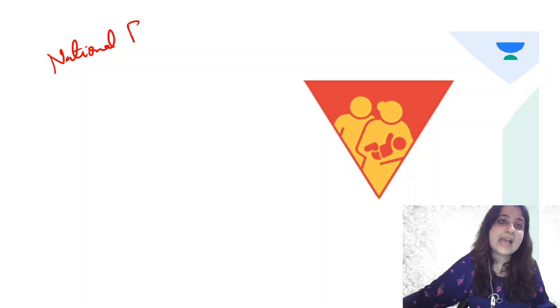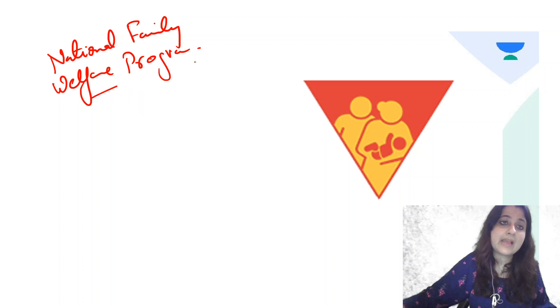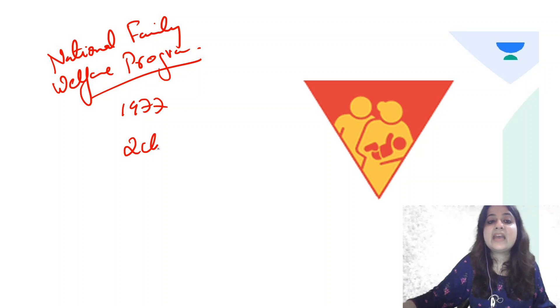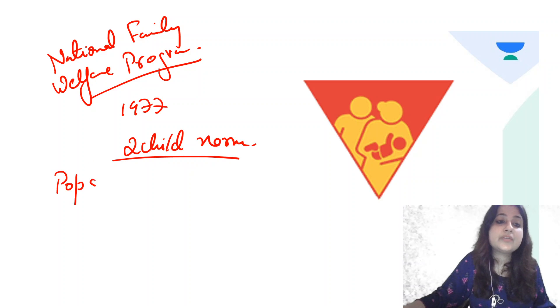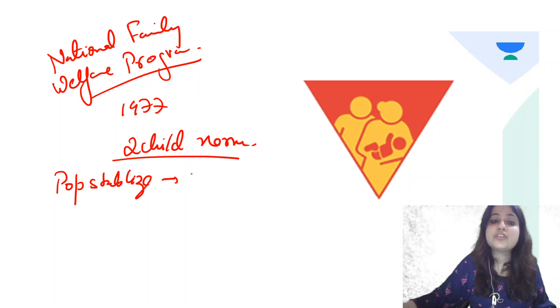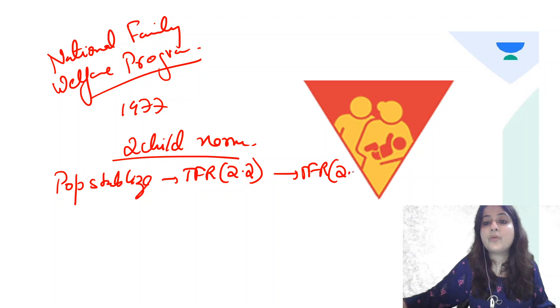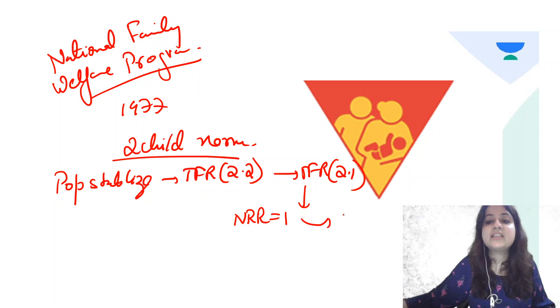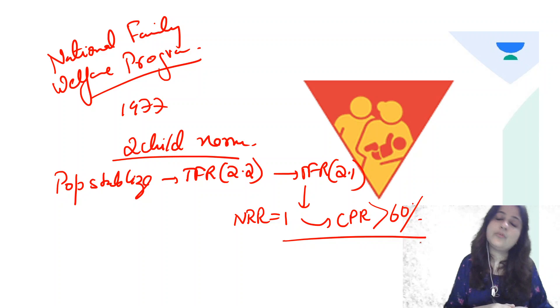The last logo for the day is an inverted triangle — this is the National Family Welfare Program. It was earlier called the National Family Planning Program; in 1977 it was renamed. We adopt a two-child norm according to our National Population Policy. Our current TFR is 2.2, and it needs to become 2.1. For the TFR to become 2.1, the net reproduction rate should equal 1. For that, the contraceptive prevalence rate should become more than 60%.